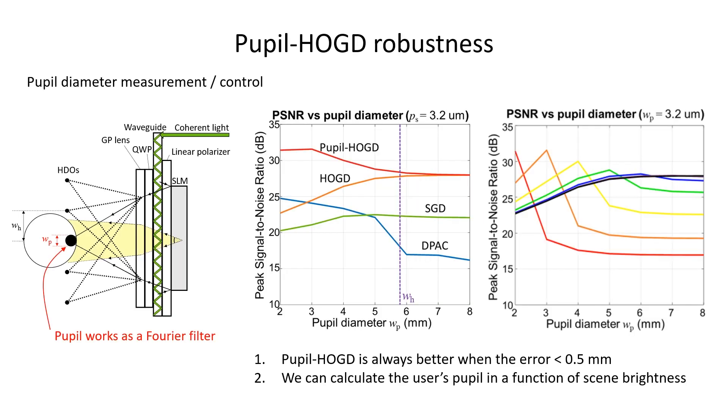Third, what are the requirements of the pupil measurement for the correct pupil HOGD algorithm? The pupil HOGD algorithm requires pupil diameter for the optimized phase generation. That means we have to extract the user's pupil diameter in real time. As shown in the right graph, the pupil HOGD algorithm always shows a better image quality as long as the pupil measurement error is less than 0.5mm.